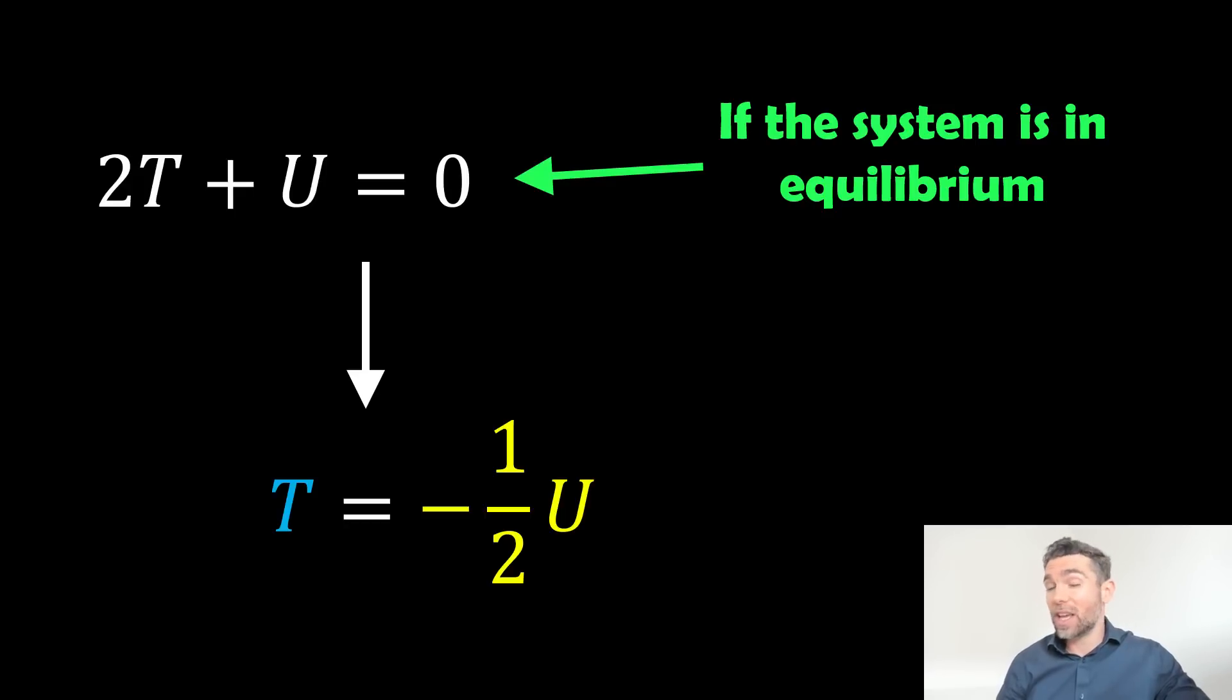And that could be a collection of stars, it could be galaxies, but the system is in equilibrium.